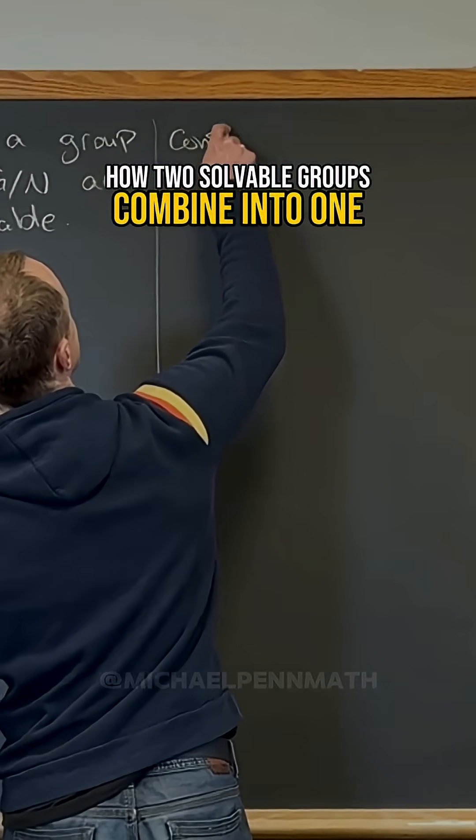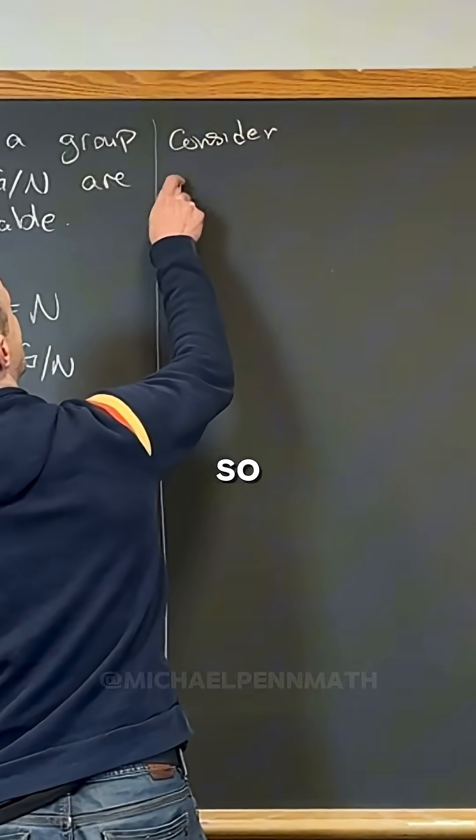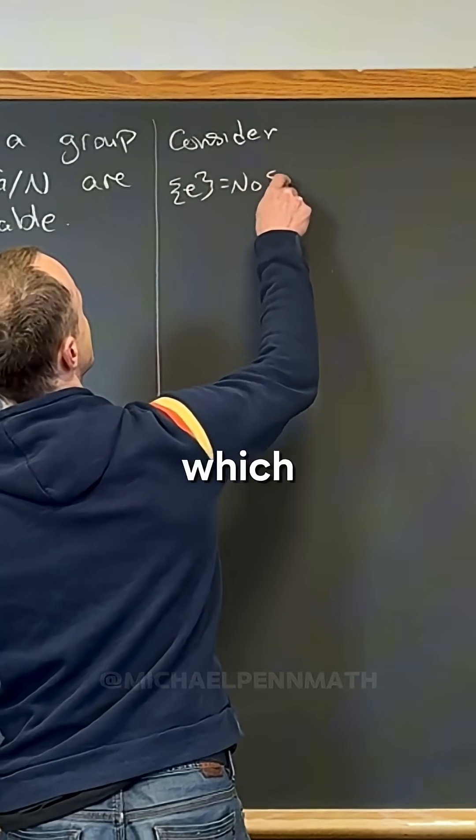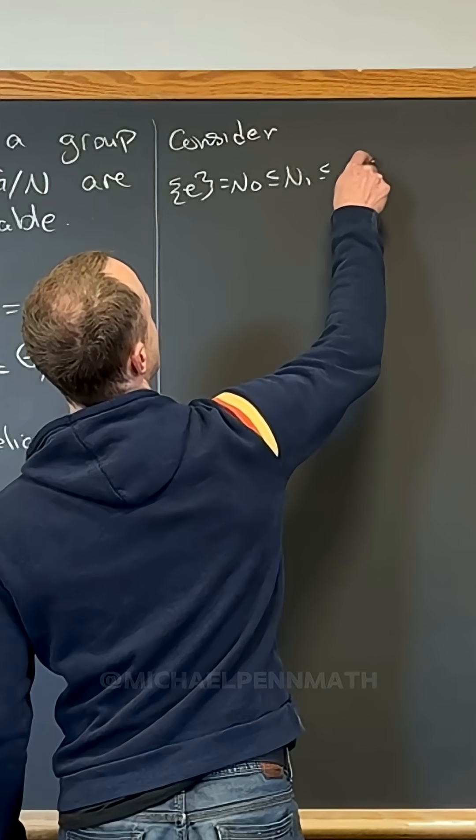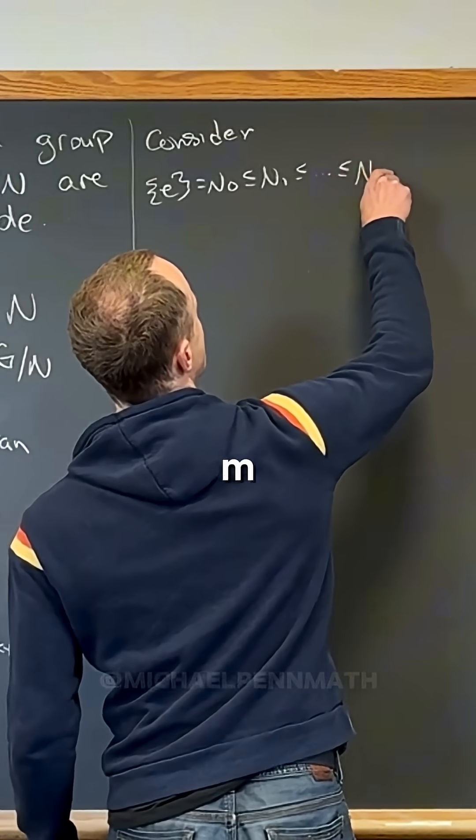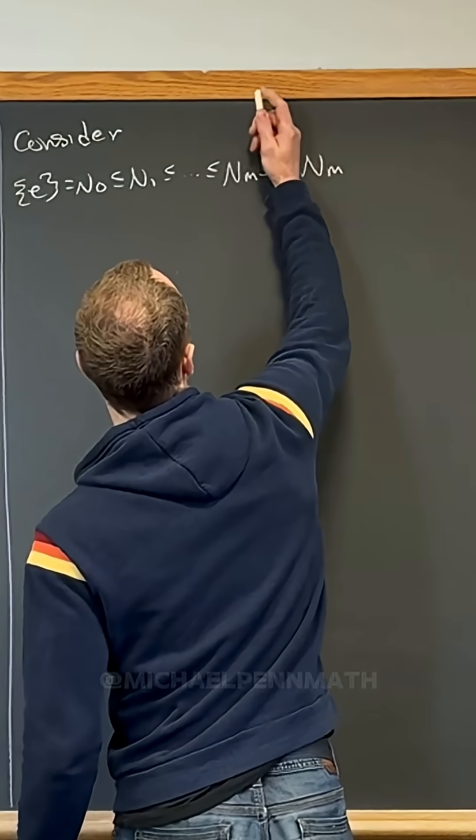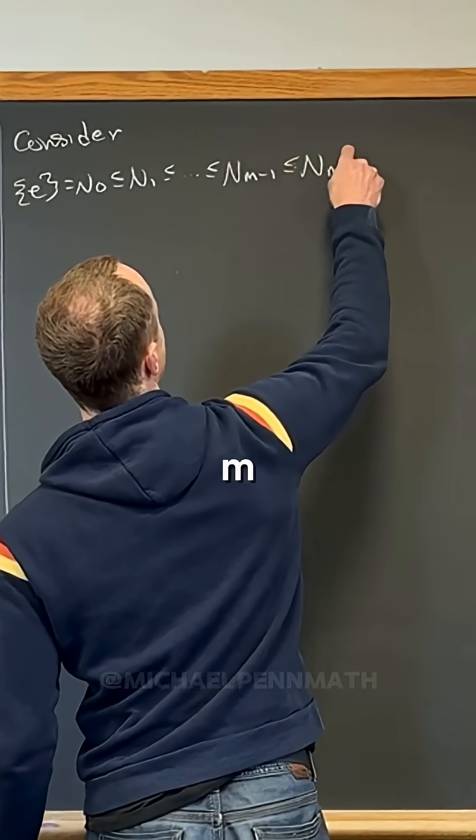So now consider the following: here is e which is n0, which is a subgroup of n1, a subgroup of nm-1, which is equal to nm, which is a subgroup of nm, which is equal to n, which is equal to g0 bar.